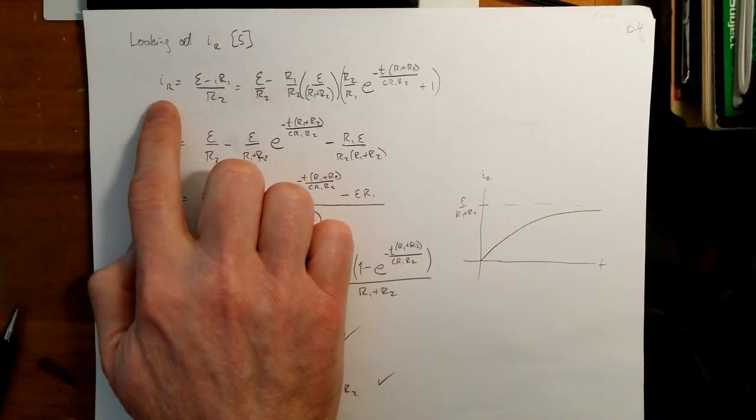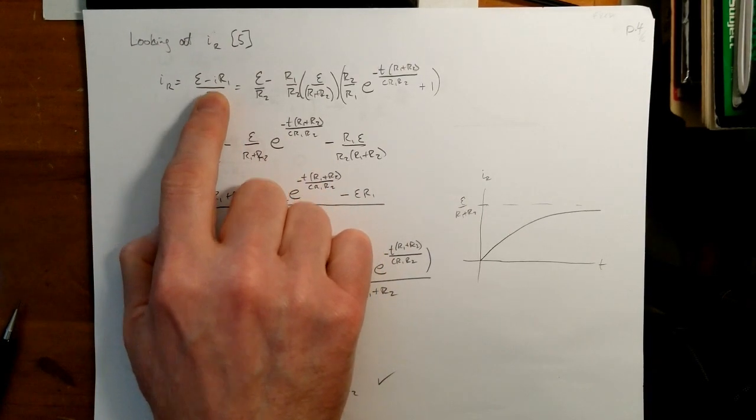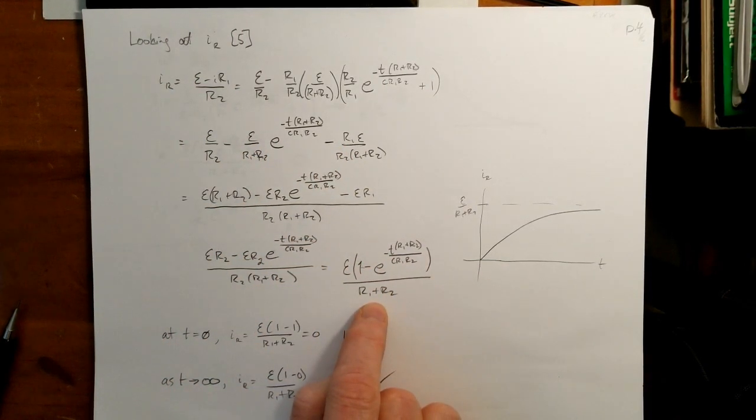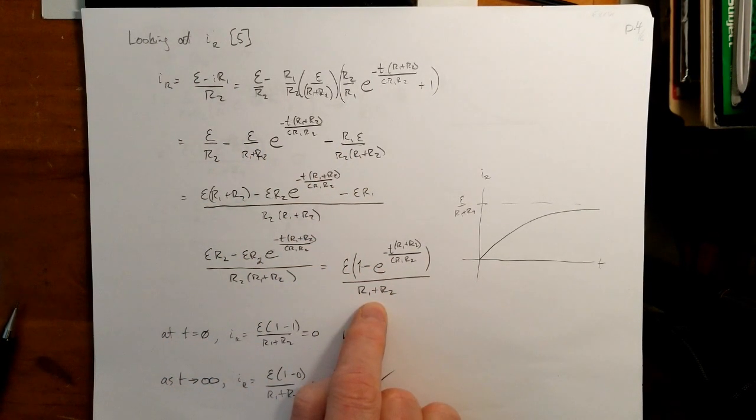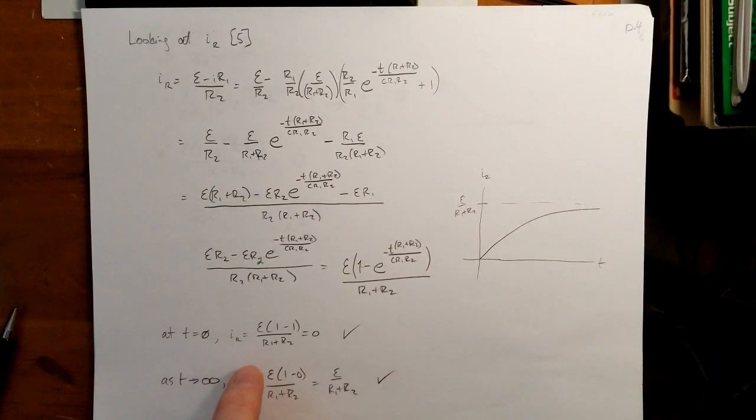So I take my equation for I sub R, which I had figured out was this. We plug in our equation for I, and it eventually simplifies down into this equation here. So this would be the equation for I sub R, which would plot out like that, but we can do a quick check.